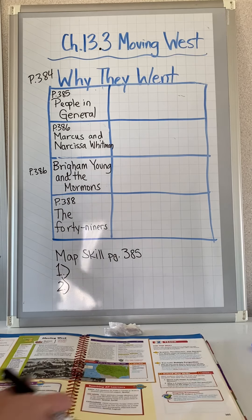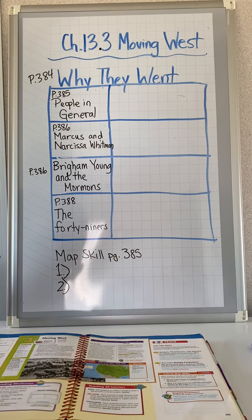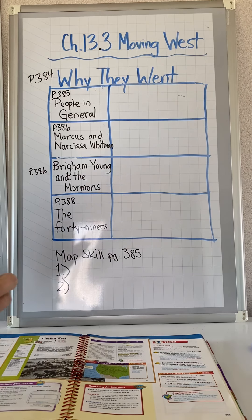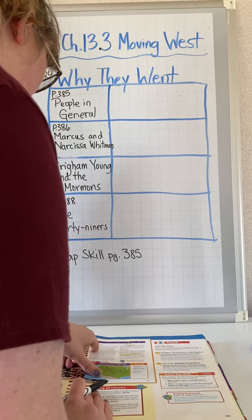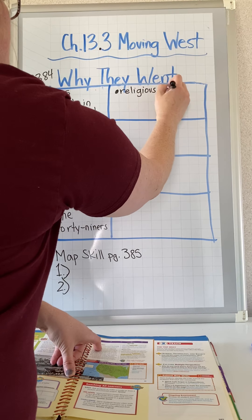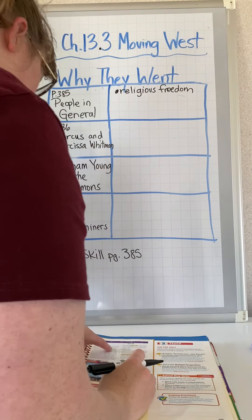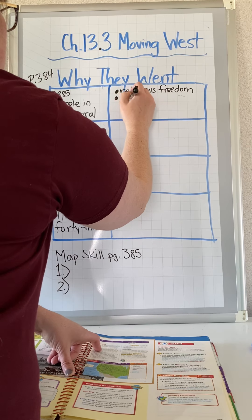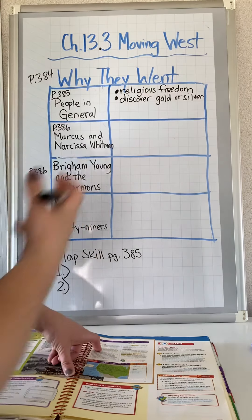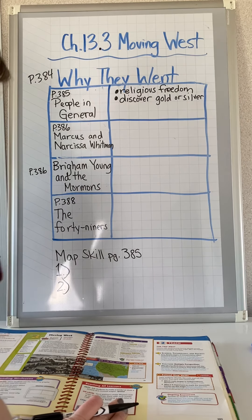Page 385 is called The Trip West. People had many reasons for traveling west of the Mississippi River. Some hoped for religious freedom. Others hoped to discover gold or silver and make a fortune. And still others came for cheap land. So for people in general we can fill in: religious freedom, discover gold or silver, and cheap land.